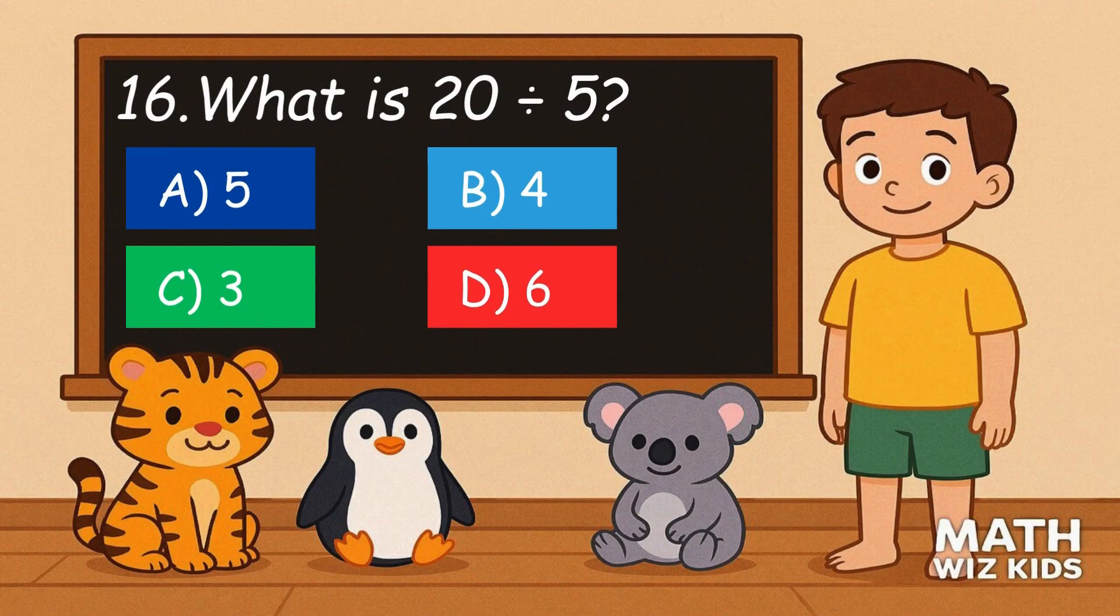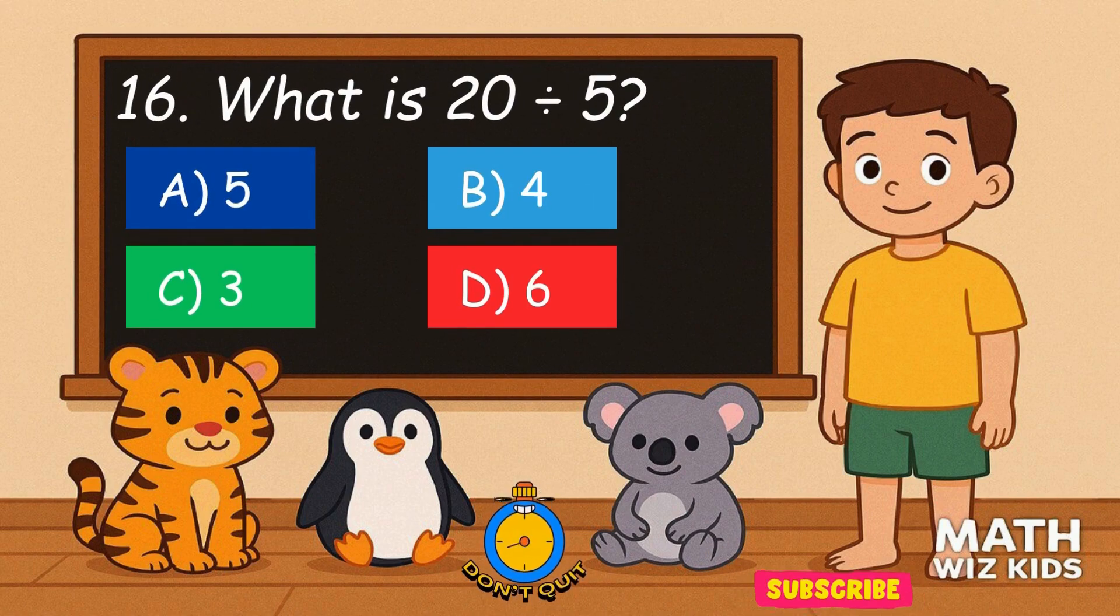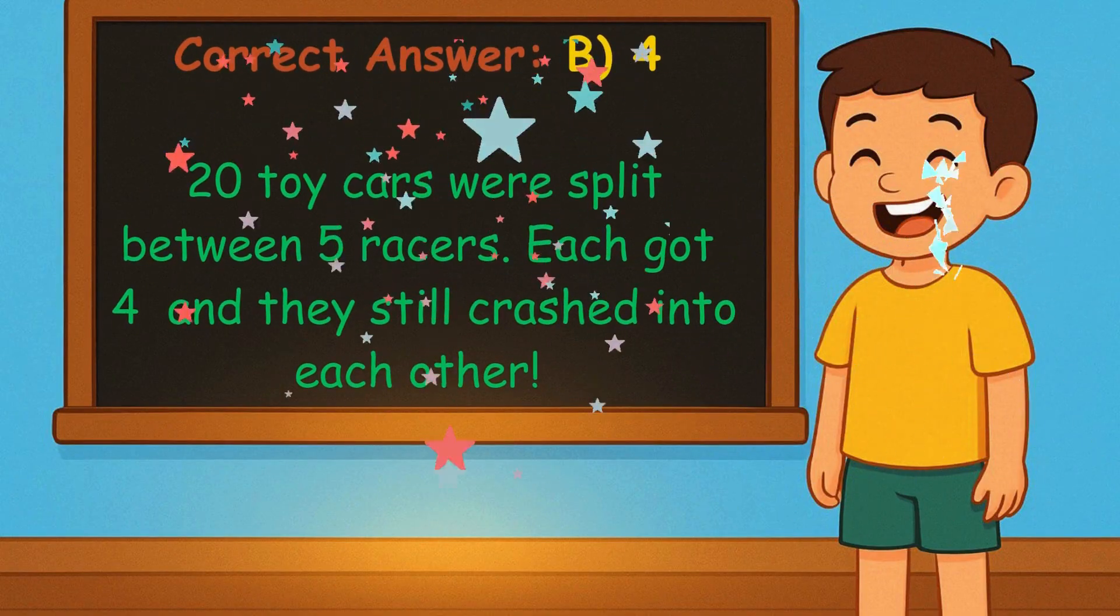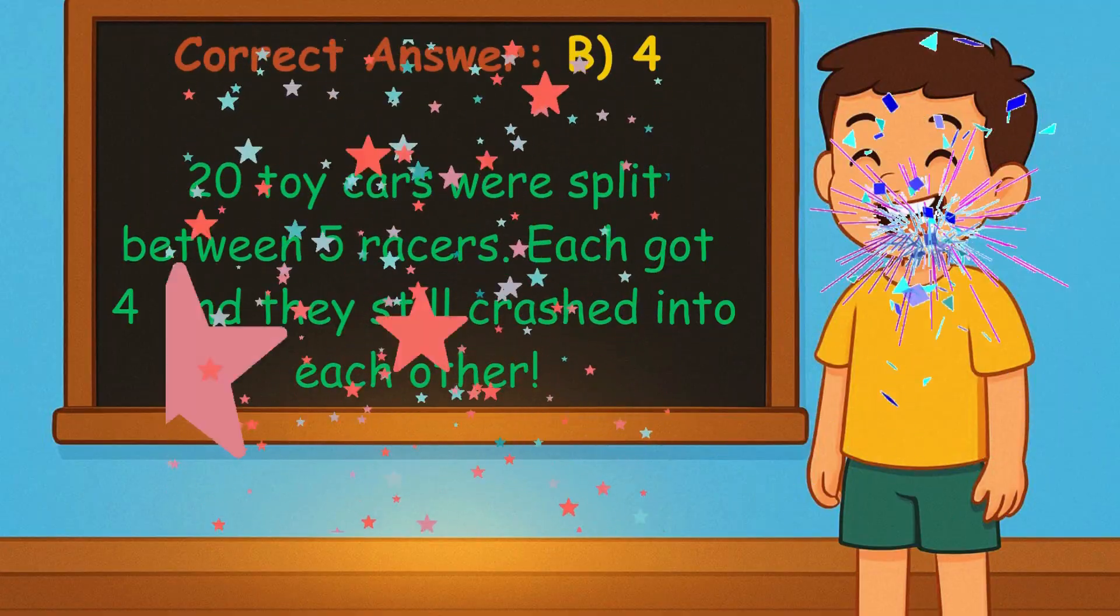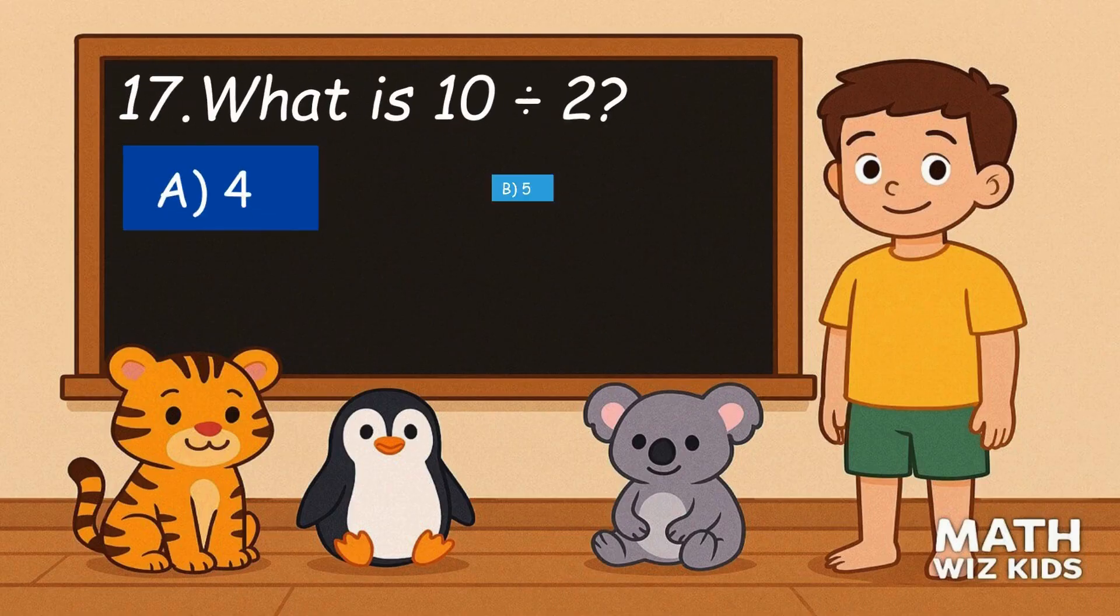16. What is 20 divided by 5? Is it A, 5, B, 4, C, 3, or D, 6? Correct answer is 4. 20 toy cars were split between 5 racers. Each got 4 and they still crashed into each other.